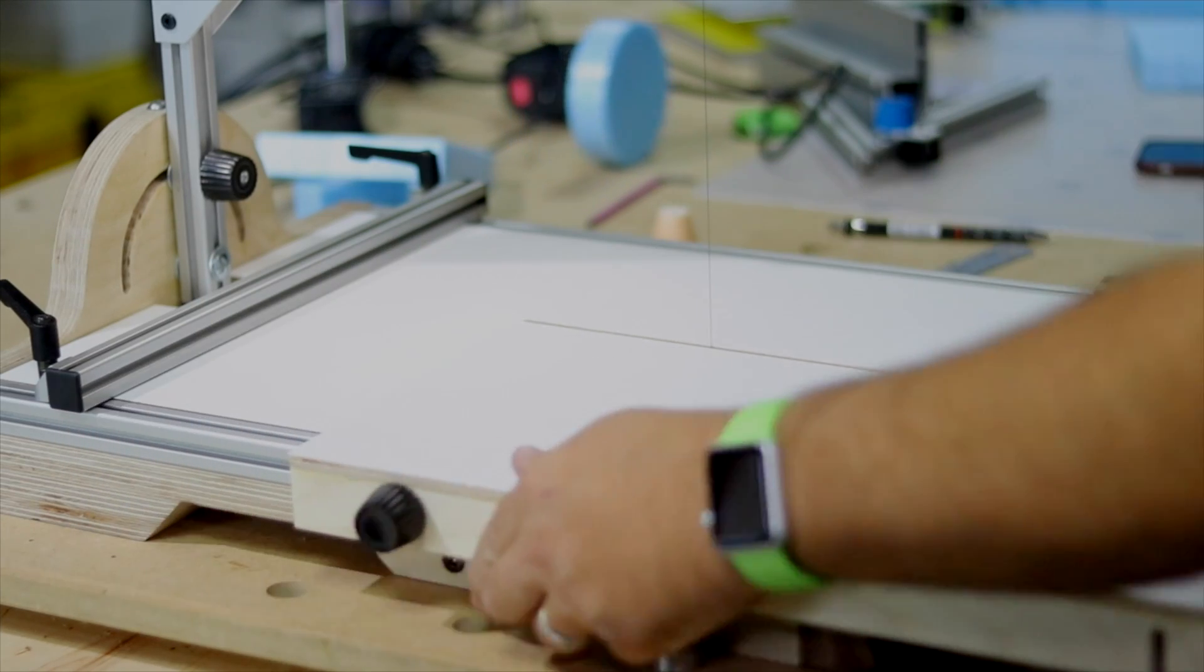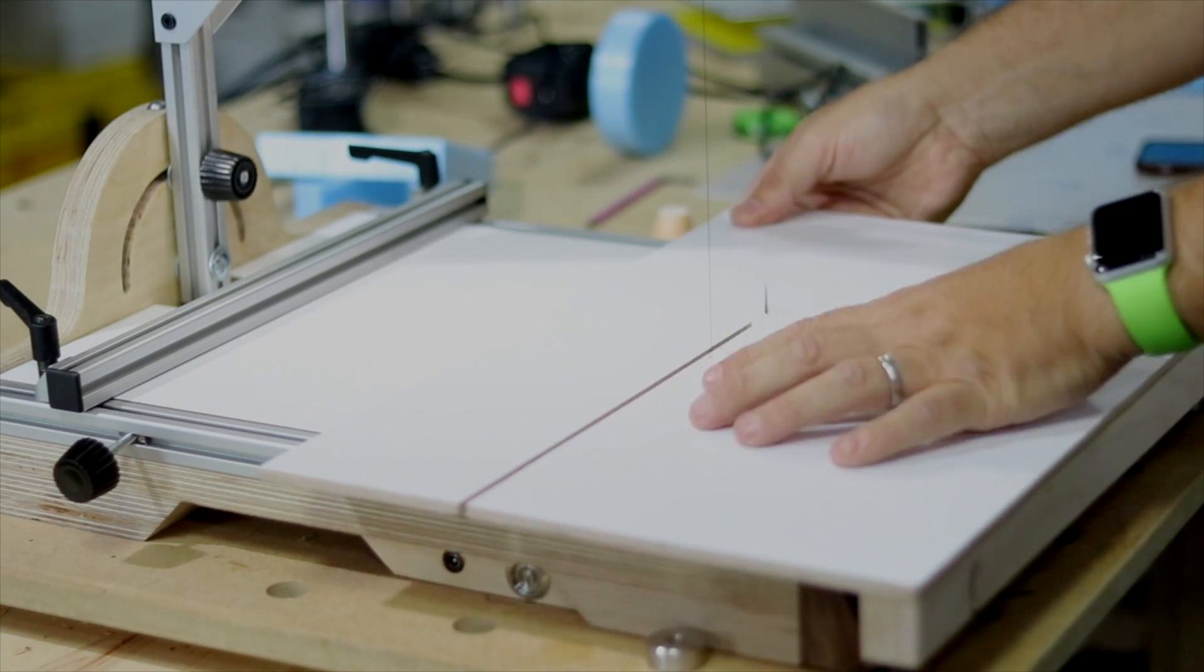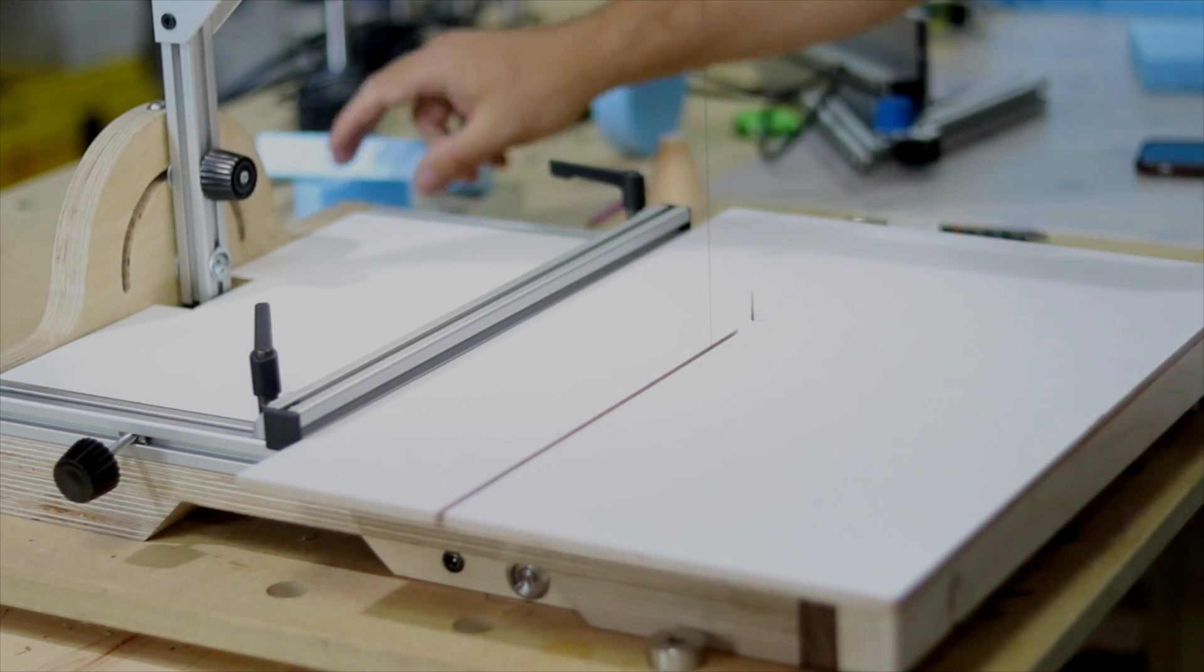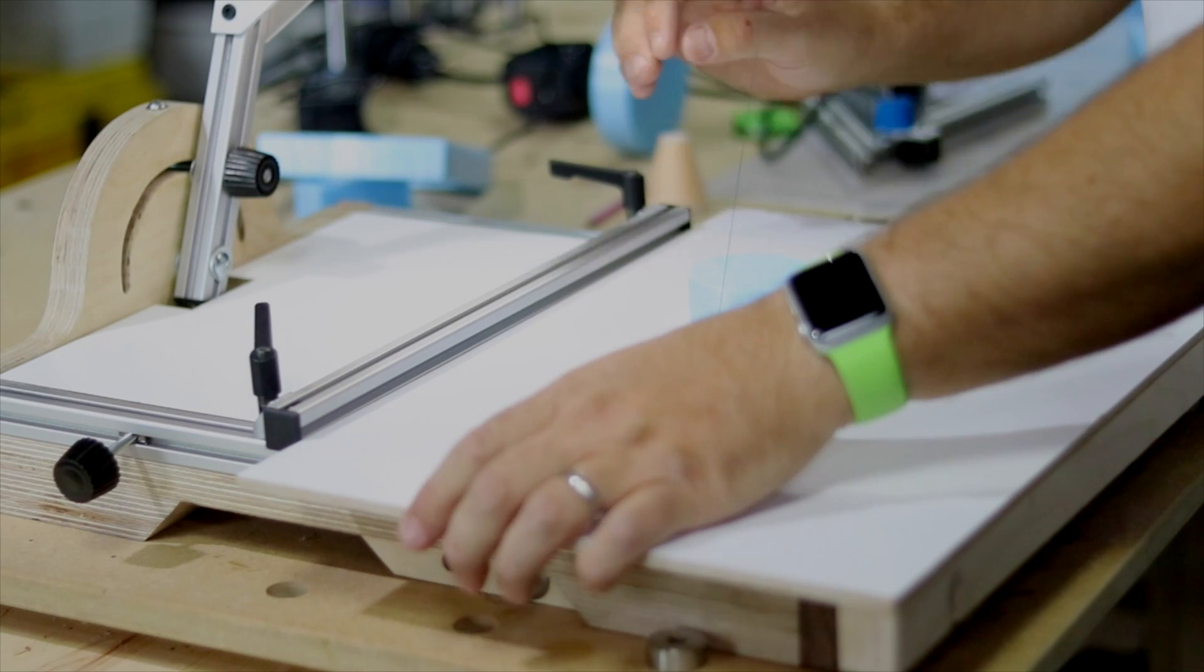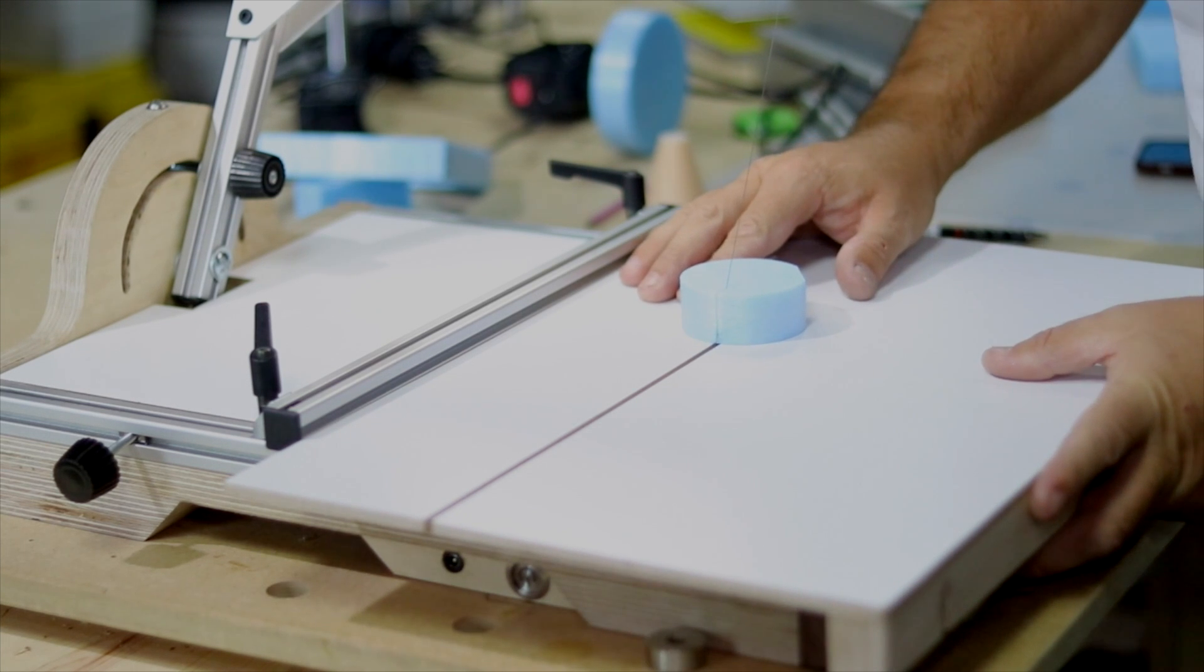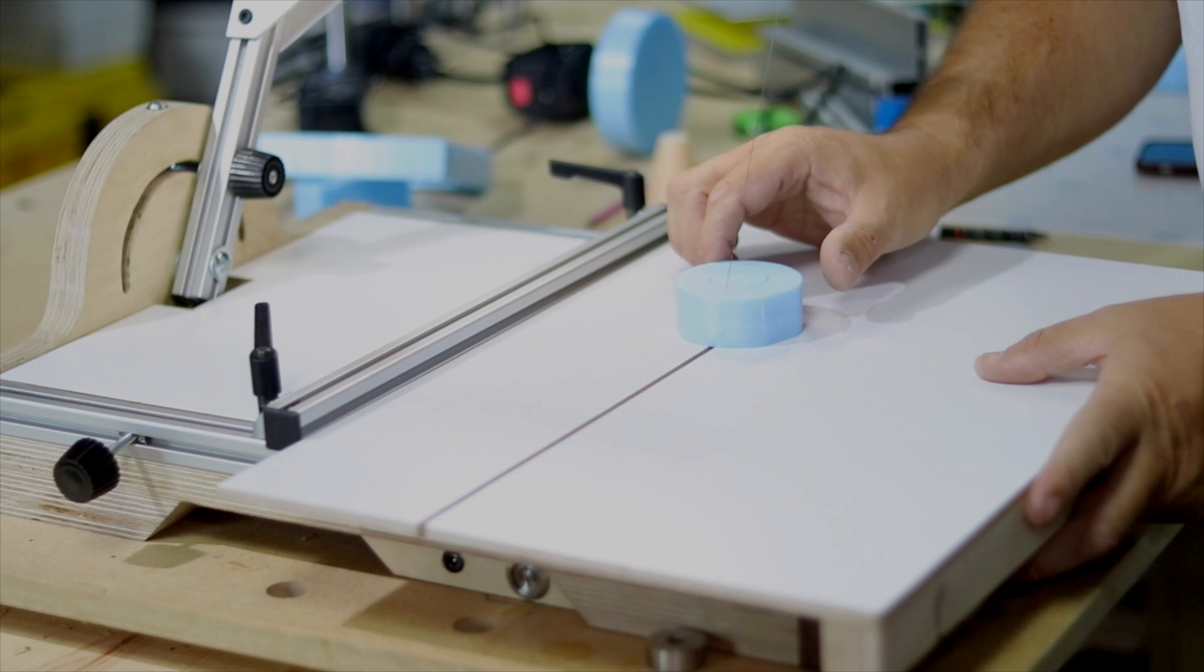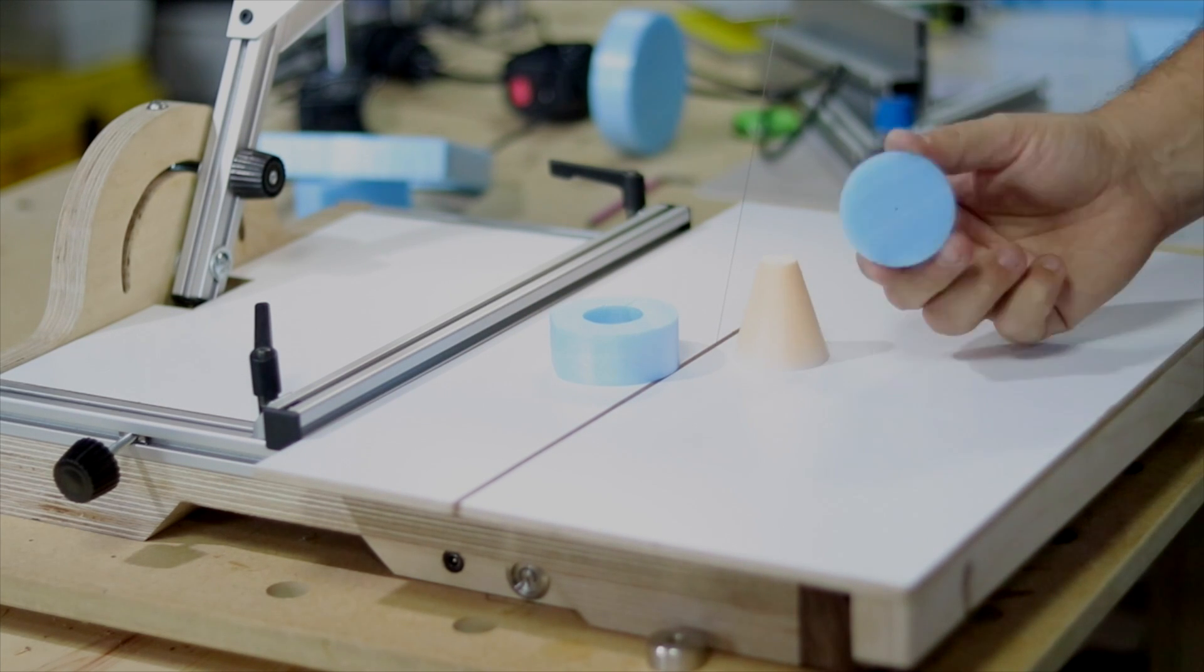So let's say we wanted to make a cone, that's slightly different. Feed this to here and adjust the angle.